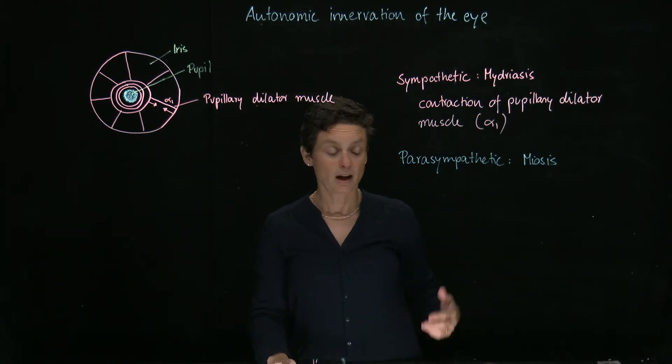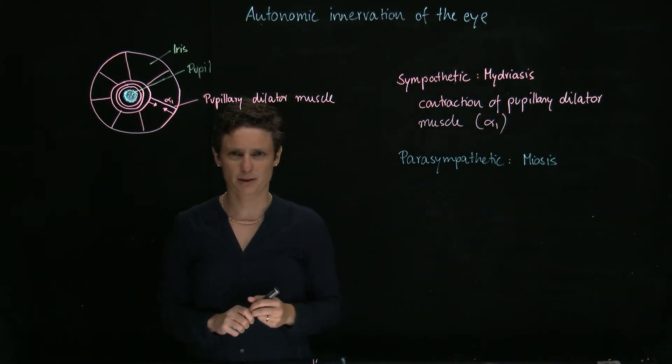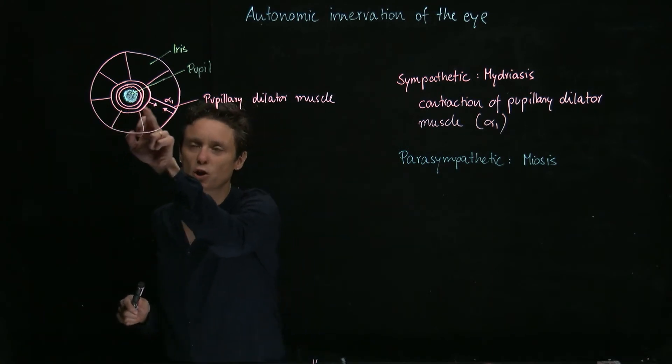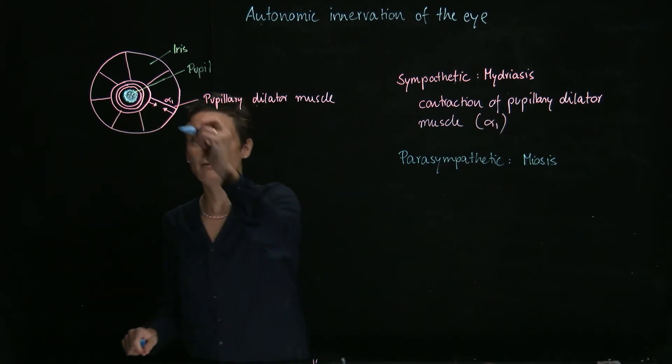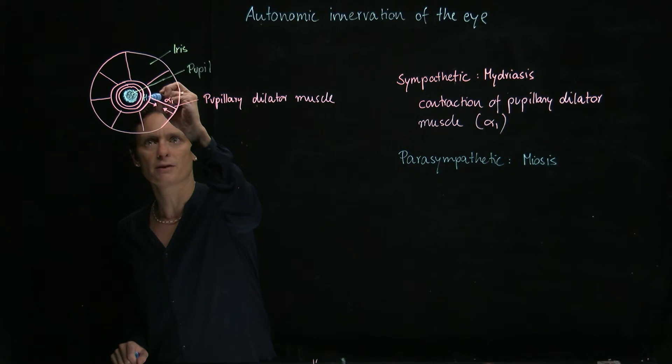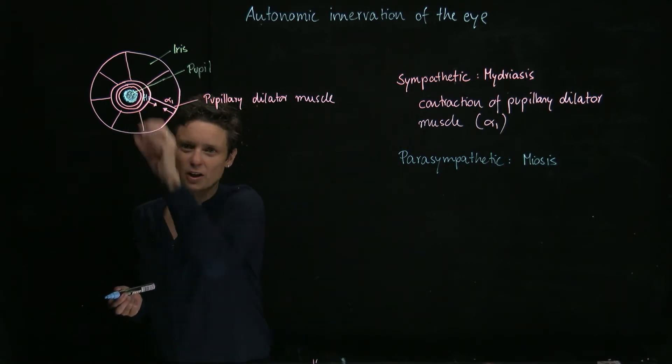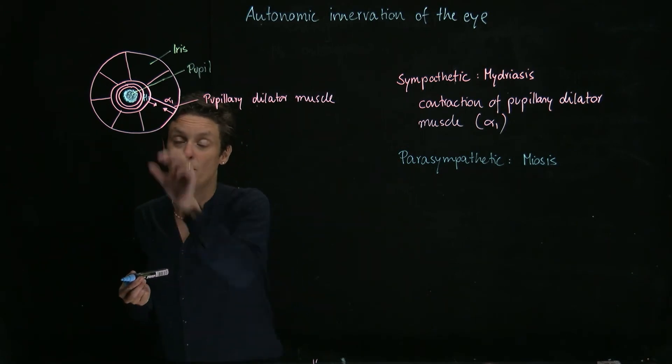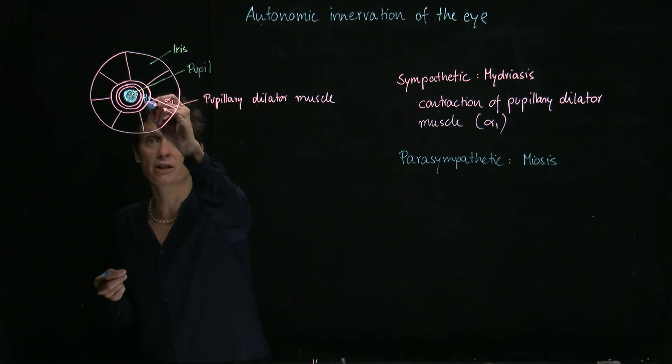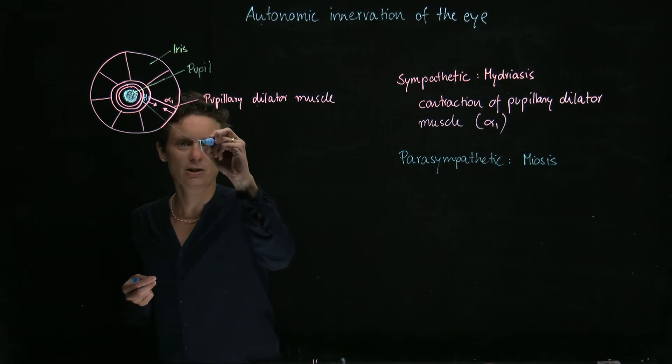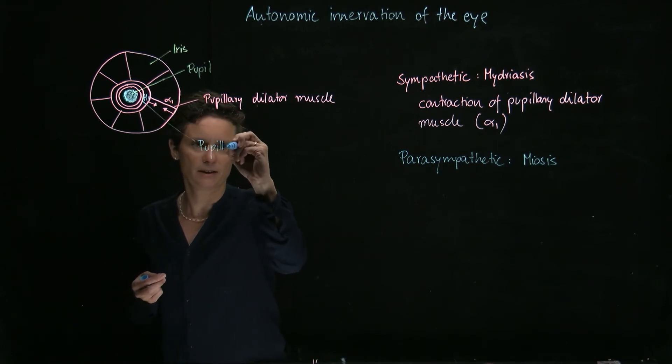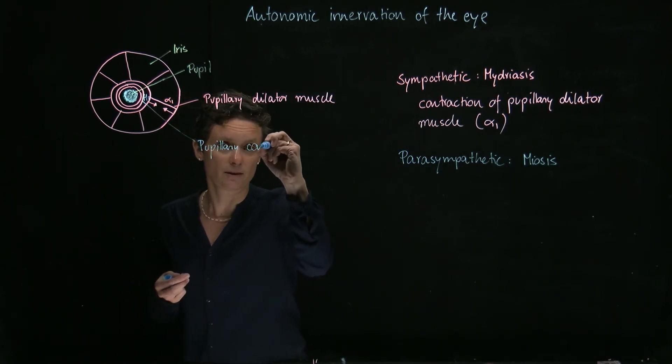Now let's look at what the parasympathetic nervous system is doing. Well, there's also this circular muscle around it, and we find here M3 receptors. Now, if you contract the circular muscle, the pupil is going to get smaller. So we have contraction of this muscle.